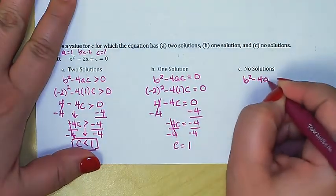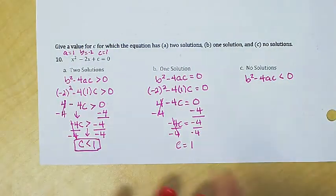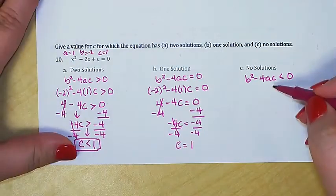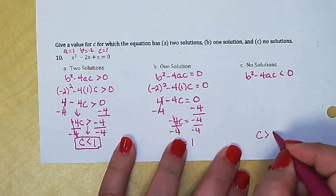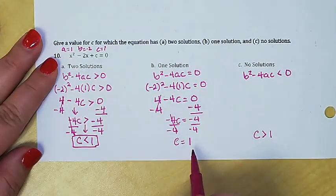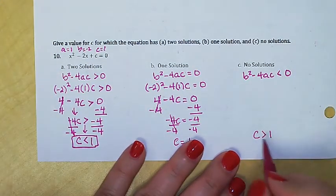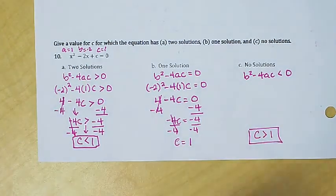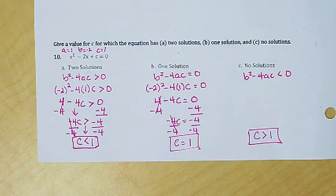For no real solutions, we want the discriminant to be less than zero. Following the same process, the result is c > 1. So the full pattern is: c less than one gives two solutions, c equal to one gives one solution, and c greater than one gives no solutions. The discriminant is very helpful when you don't need the exact solutions — just how many.